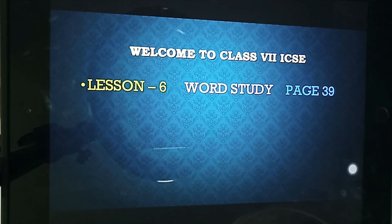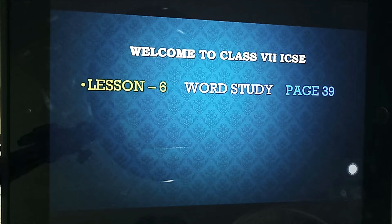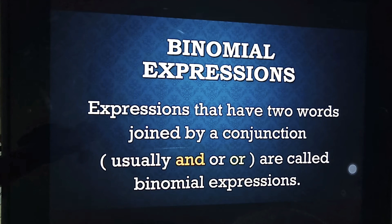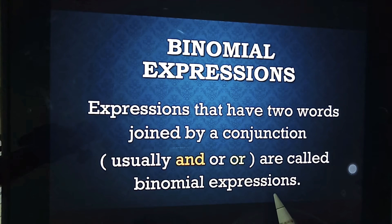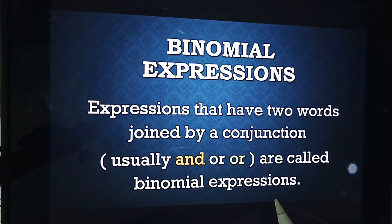Hello children, welcome back to another session of learning English. Today we're going to see Class 7 ICSE Lesson 6: Word Study. You can turn to your textbook page number 39. Today's word study we're going to deal with binomial expressions. Expressions that have two words joined by a conjunction, usually 'and' or 'or,' are called binomial expressions.